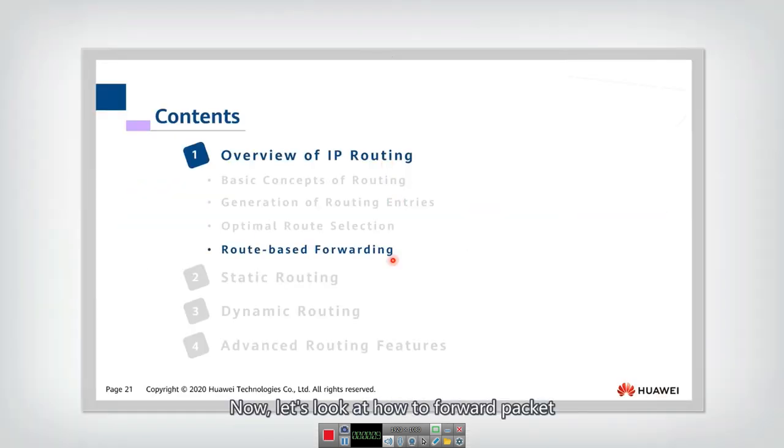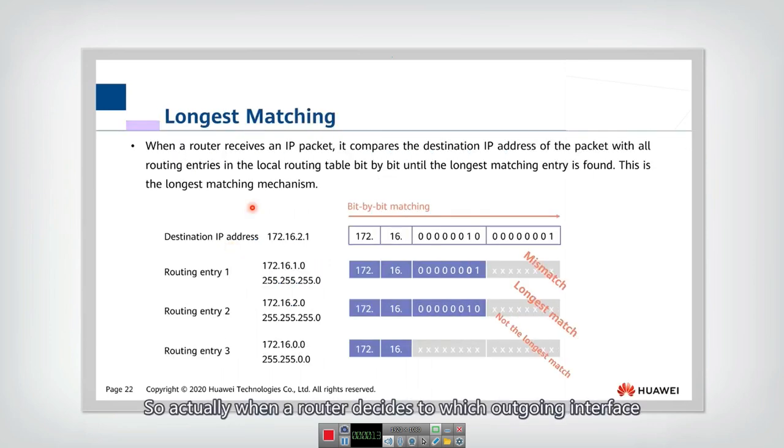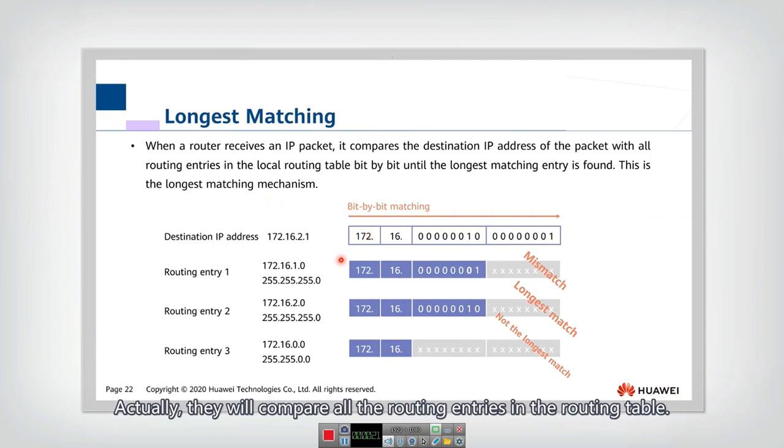Now let's look at how to forward packets based on the route. When a router decides which outgoing interface should transmit, it will compare all the routing entries in the routing table and use longest matching to do the comparison. The process is like this: